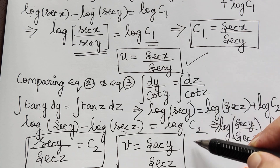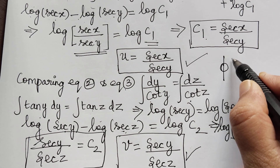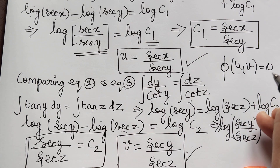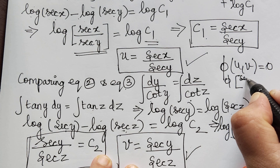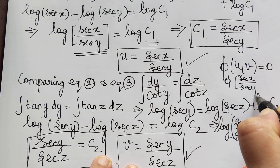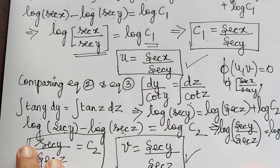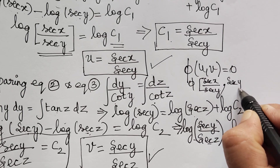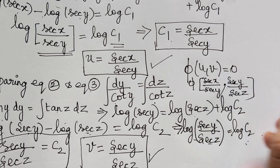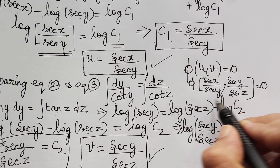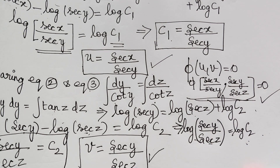We have obtained both the first solution u and the second solution v. Therefore, the general solution is φ(u, v) = 0, which gives φ(sec x / sec y, sec y / sec z) = 0 as the general solution. Hope you have understood this problem. Thank you.